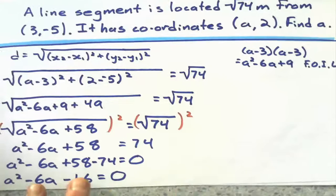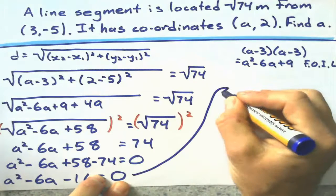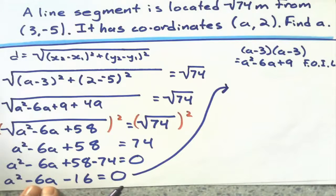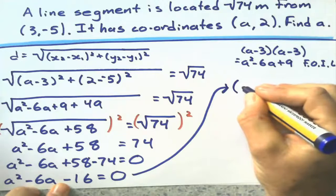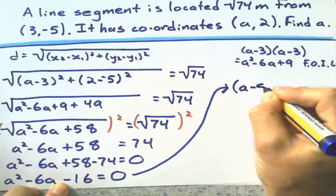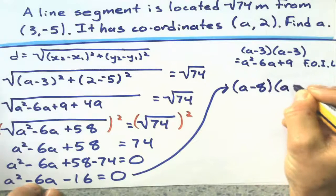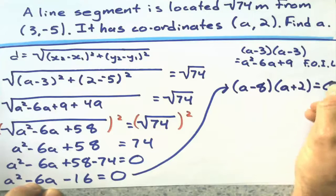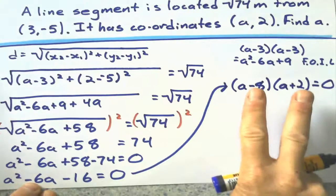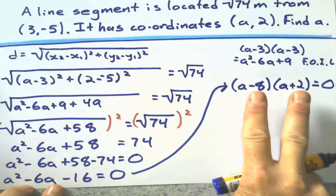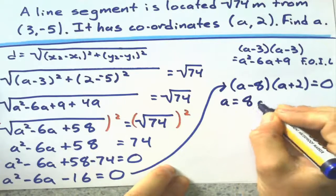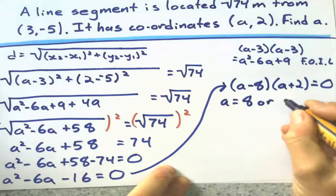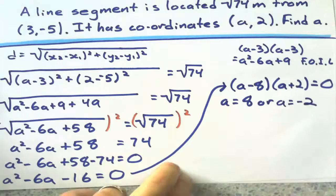And for this guy, I think that factorizes what multiplies to get negative 16 and adds to get to negative 6. I think I've got a case there. I think it's 8 and 2 somehow. I think the 8 will be negative. So, that's a minus 8. And the 2 will be positive. a plus 2 equals 0. Does that check? Negative 8 plus 2 is negative 6. And negative 8 times 2 is negative 16. Yep. So, I know my solutions for a can be either positive 8 or it can be a negative 2.